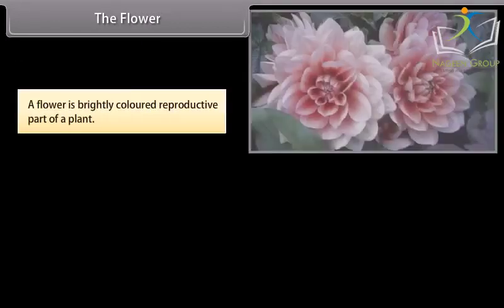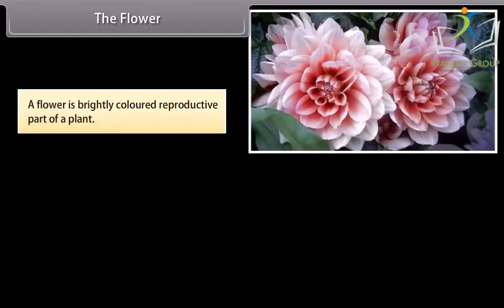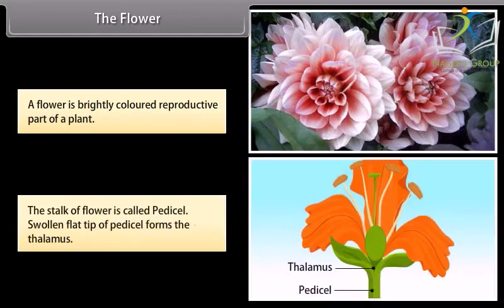The flower. A flower is brightly colored reproductive part of a plant. The stalk of flower is called pedicel. Swollen flat tip of pedicel forms the thalamus.